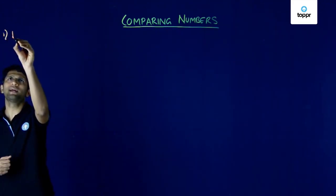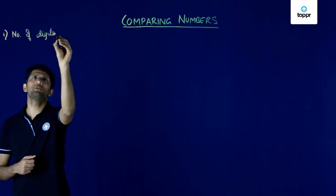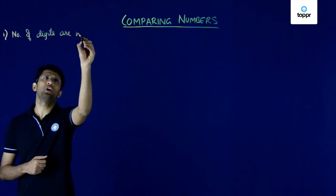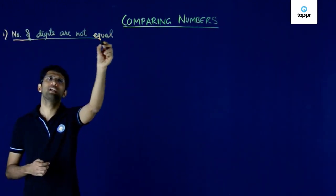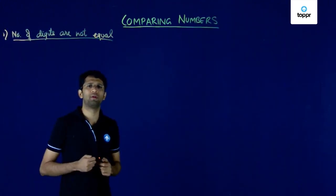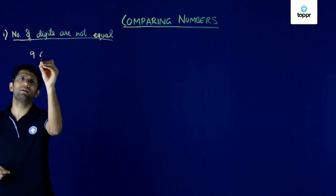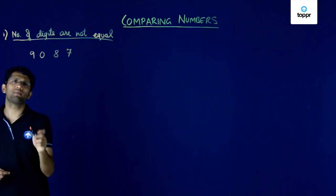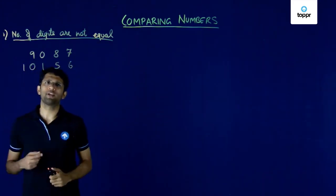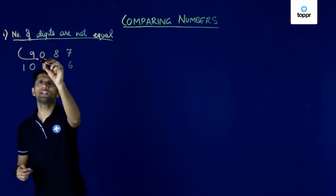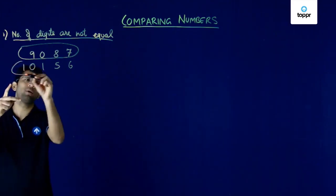In the first case, the number of digits in the two numbers to be compared are not equal. So the first case is one in which the number of digits in the two numbers that we are going to compare are not equal. Now if you want to take an example of such a case, suppose we want to compare the number 9087 with the number 10156.